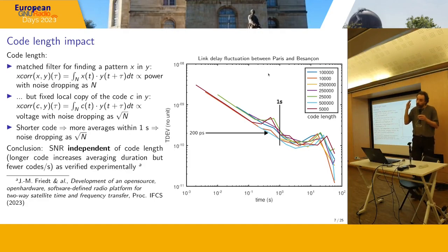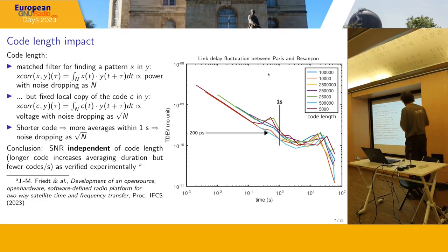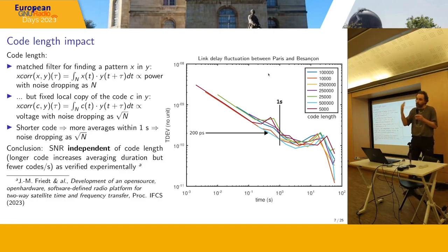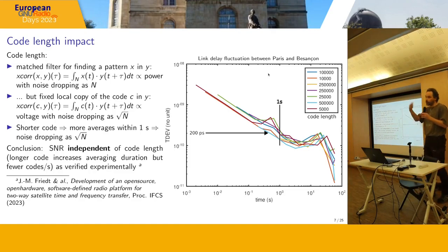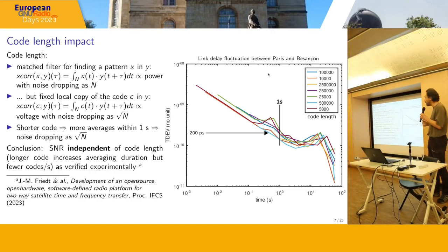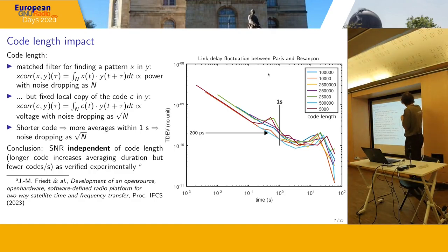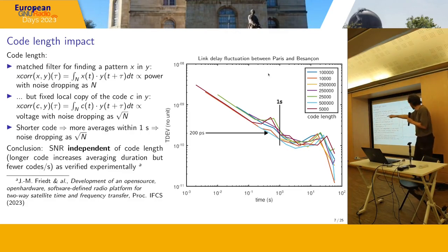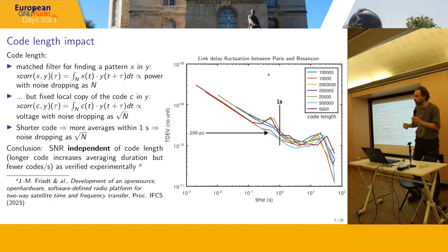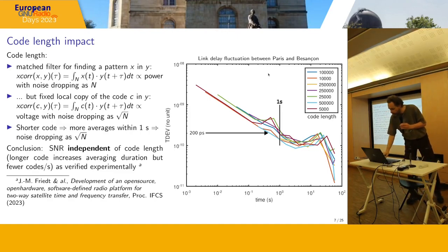So the performance of time transfer is not the driving factor in selecting code length. The Japanese selected the GPS code which is 2^10 = 1023 chips; SATRA used 10,000 chips; I used a one-second-long 2.5 million chip code. At the end of the day you get 200 picoseconds standard deviation regardless — code length doesn't matter for the timing noise floor.